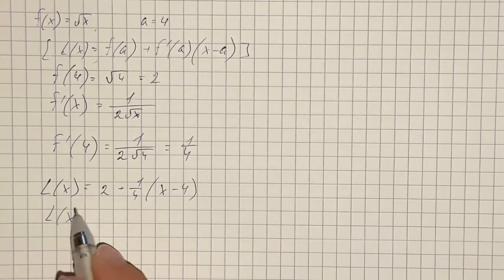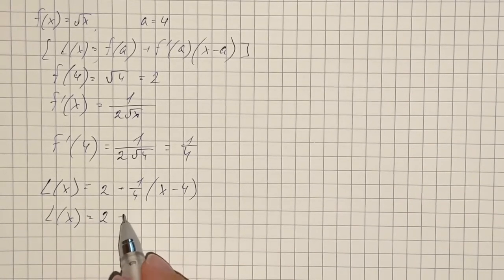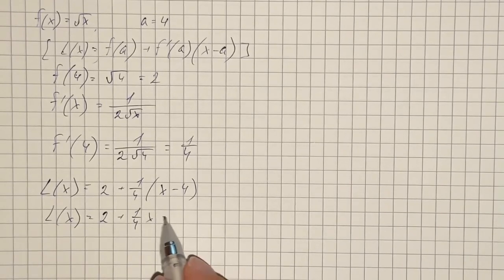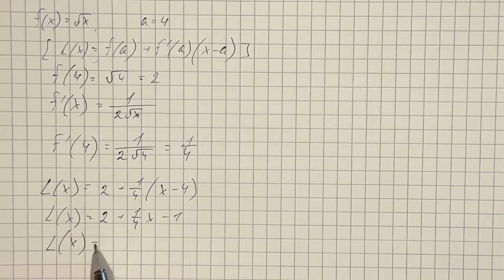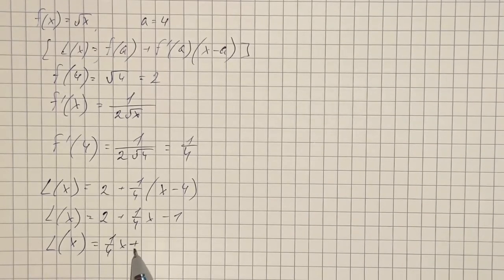So we simplify and get 2 plus 1 fourth x minus 1. And the final answer is the linearization of the given function is 1 fourth x plus 1.